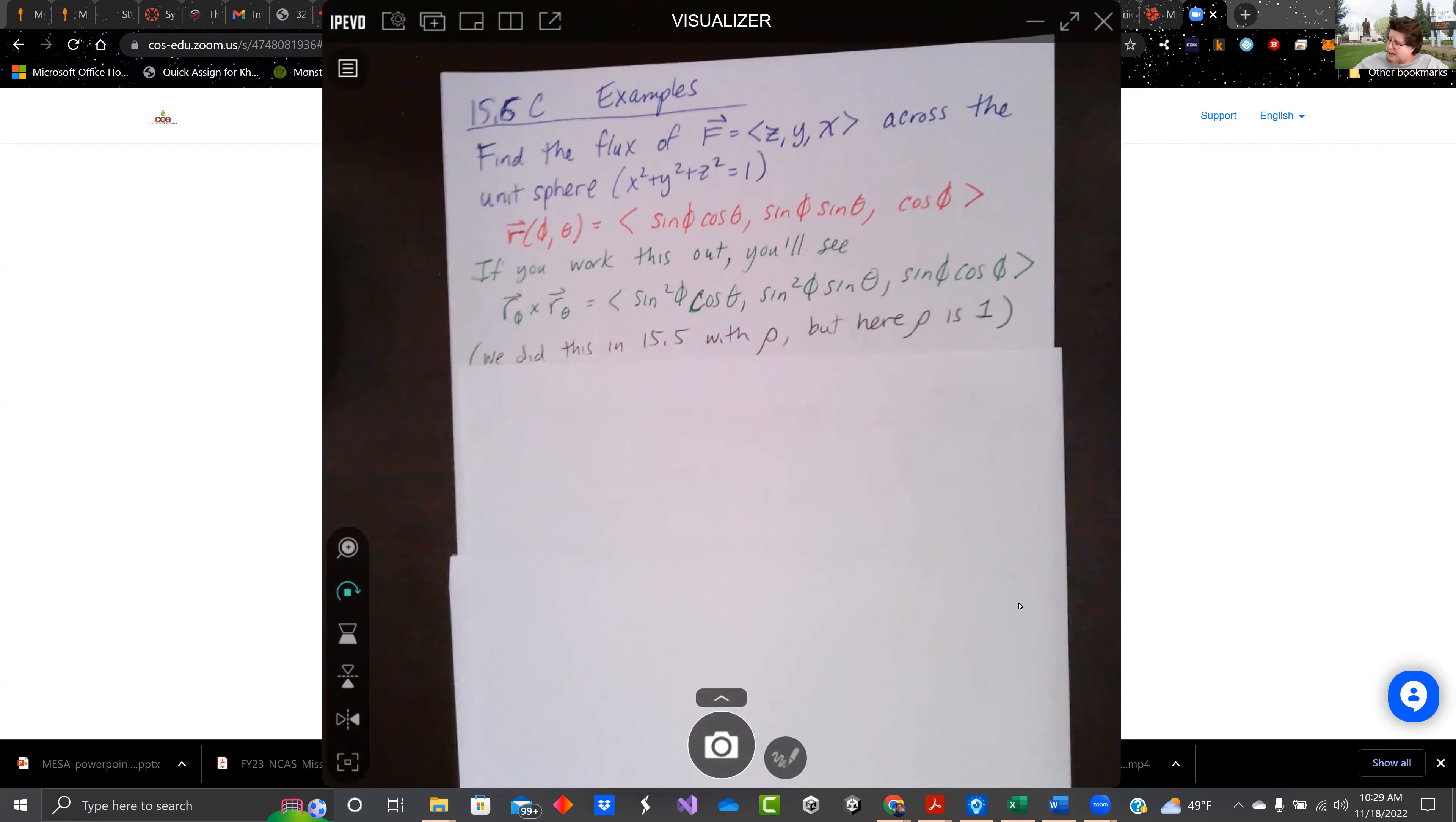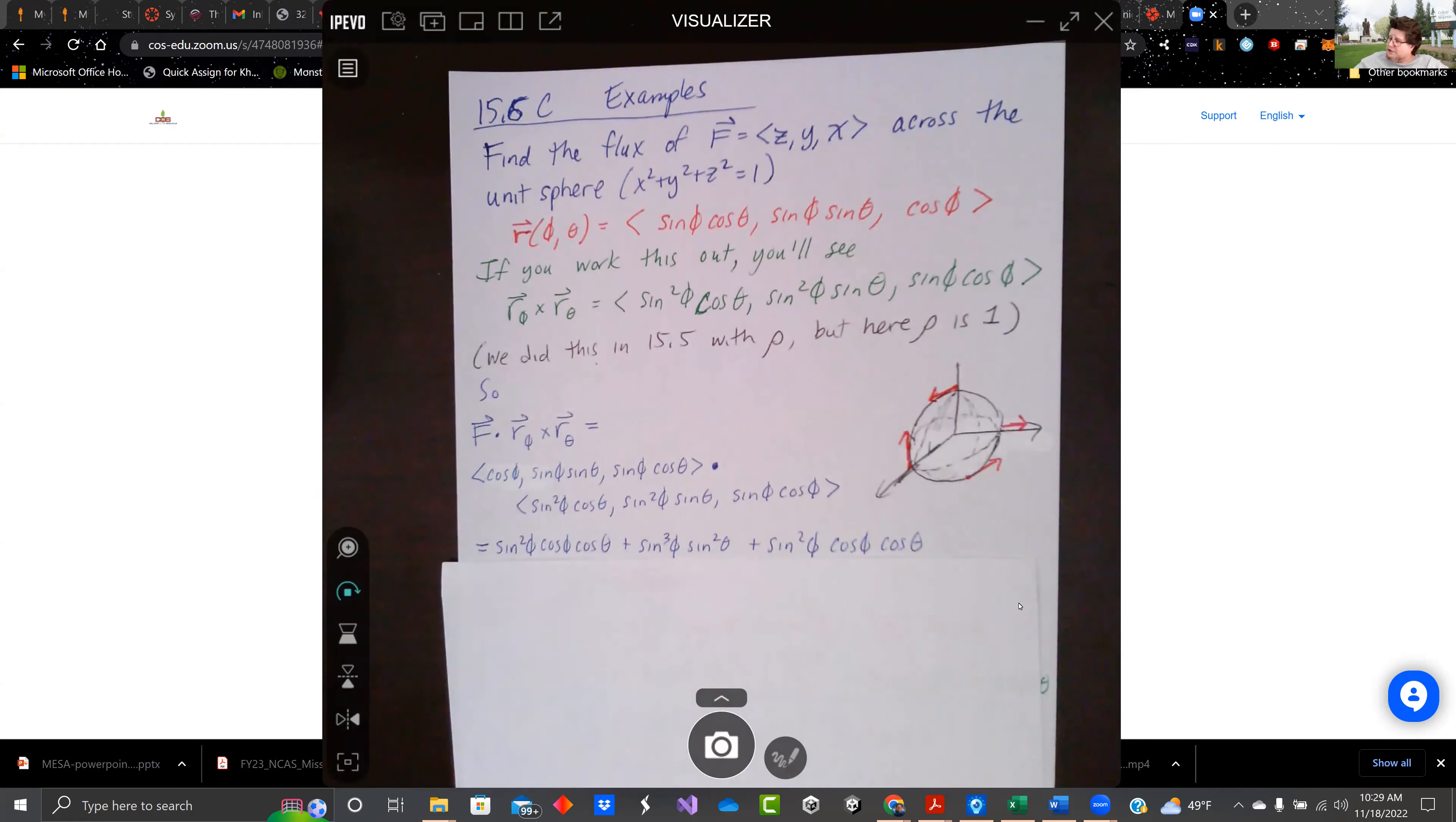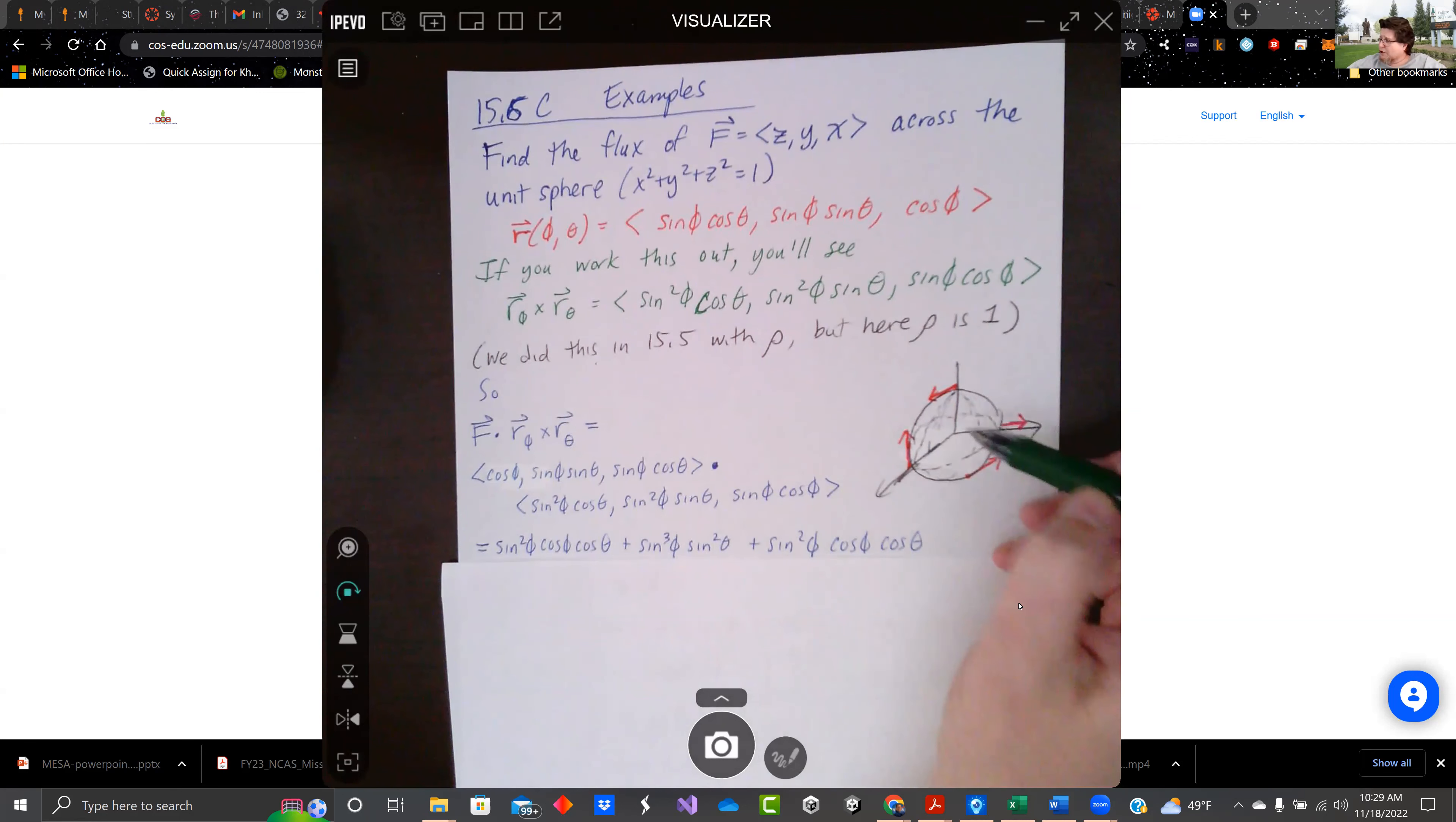So that's my R phi cross R theta. So I drew the sphere because it's like, what's going on with this weird function, this vector function?